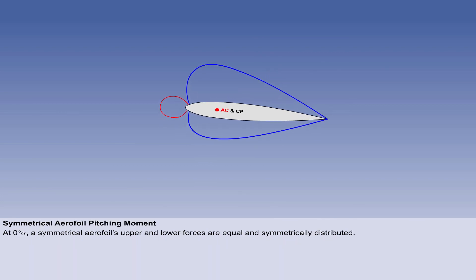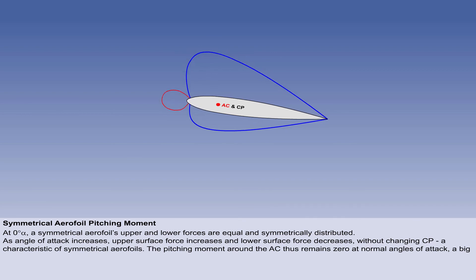With a symmetrical aerofoil at 0 alpha, the upper and lower forces are equal and symmetrically distributed. With an increasing angle of attack, the upper surface force increases, and the lower force decreases. A change in the magnitude of the lift forces has taken place without a change in the position of the centre of pressure, which is a characteristic of symmetrical aerofoils.